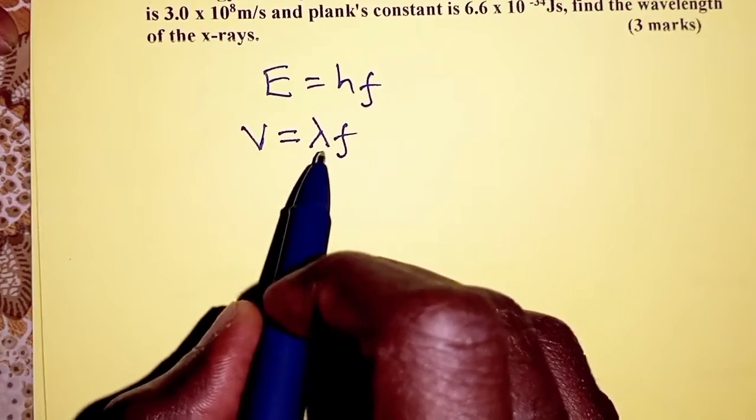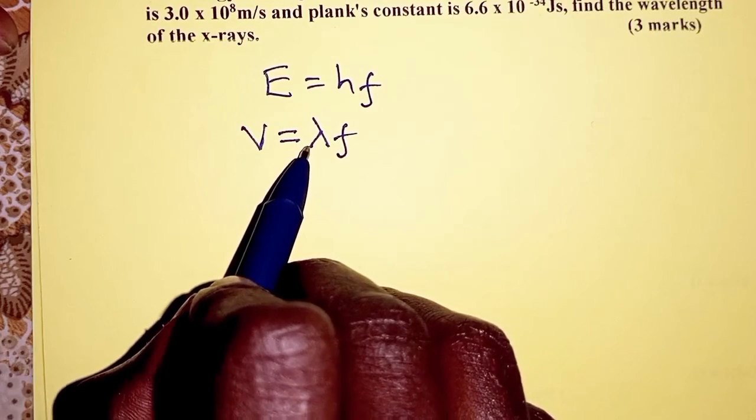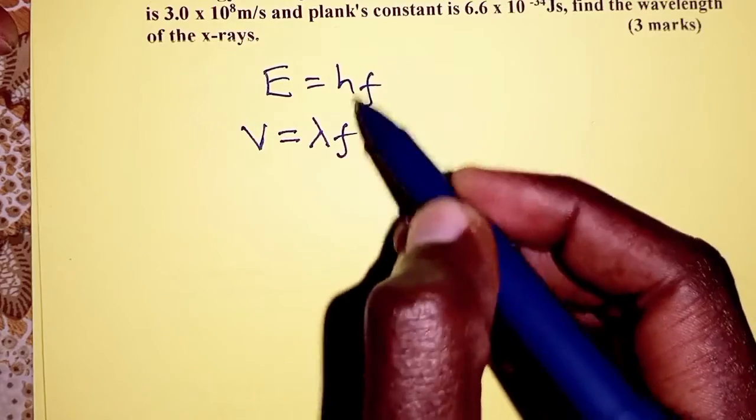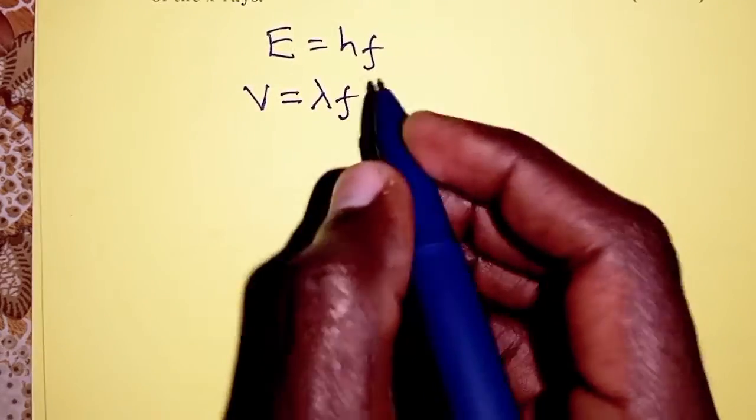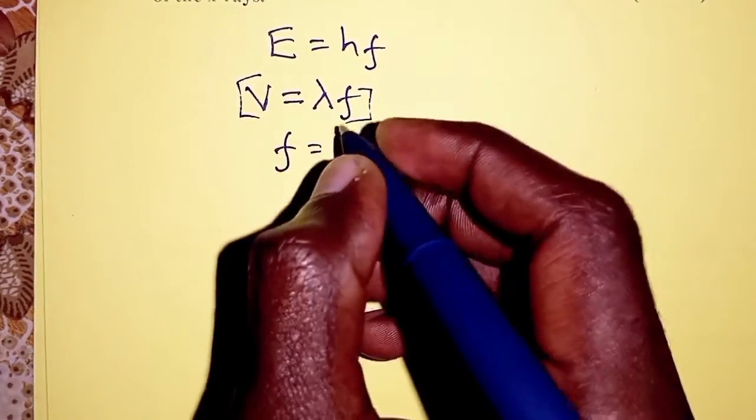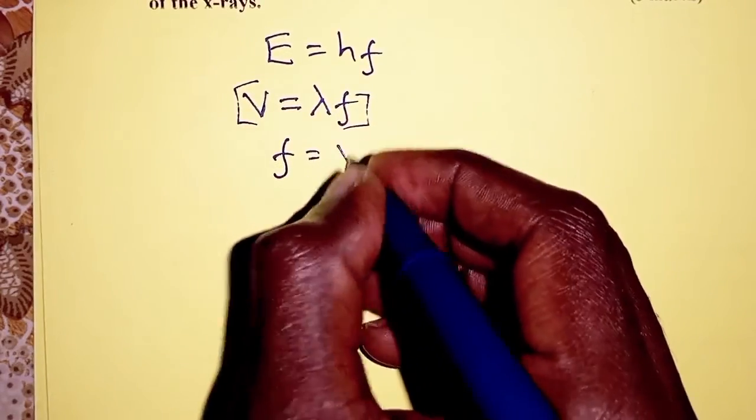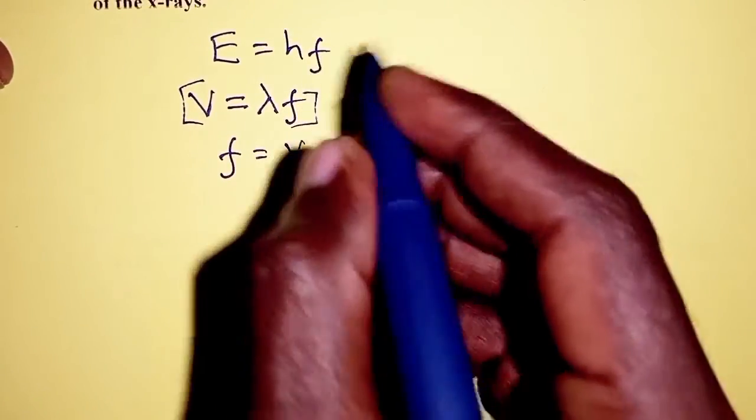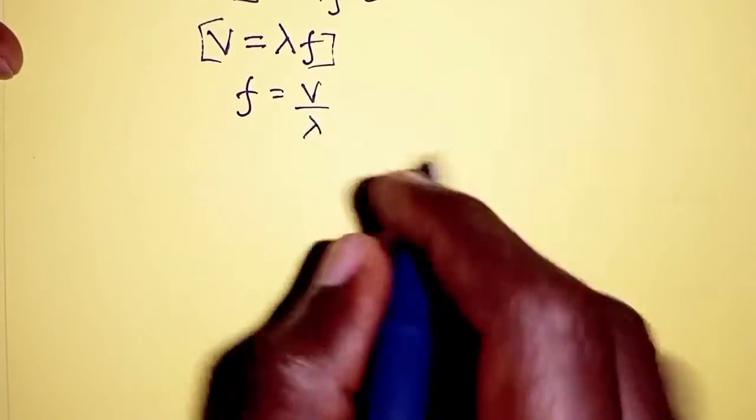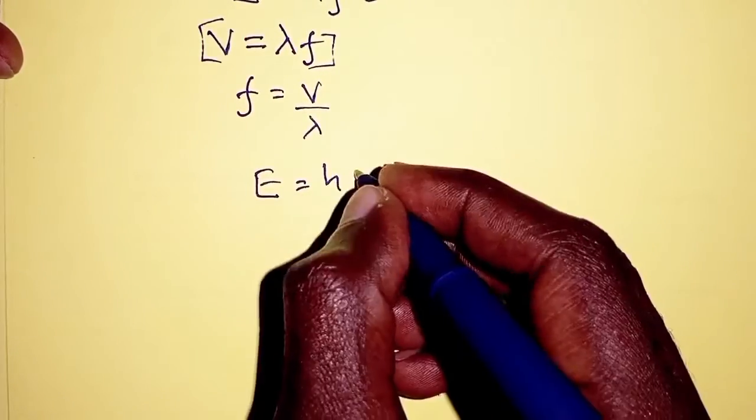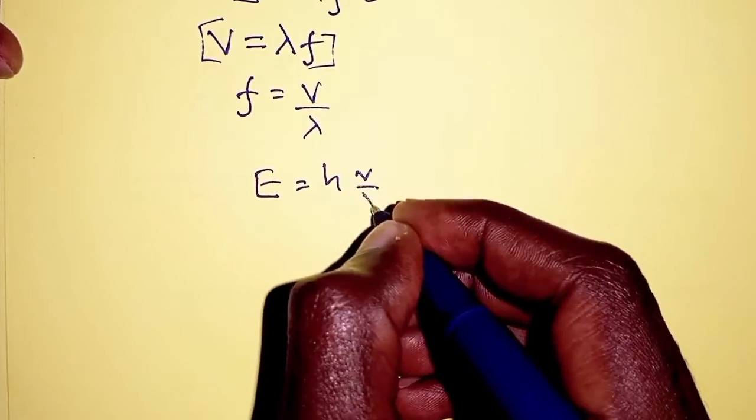But remember we need to get lambda which is the wavelength, and therefore we are going to replace f. So if we make f the subject for the wave equation, f becomes v over lambda. So in place of f in this equation, we simply have E equals h v over lambda.